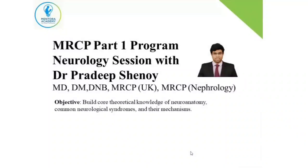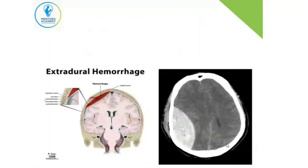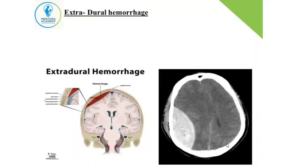Welcome to this session on neurology. With this brief background of neurophysiology and neuroanatomy, let us start with intracerebral bleeds. One of the most important types is called extradural hemorrhage, meaning the hemorrhage is outside the dura but within the skull.